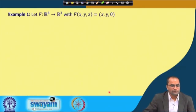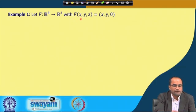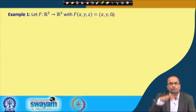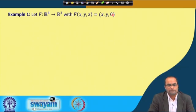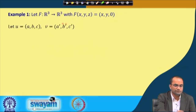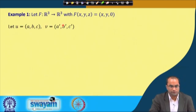Let us go through some examples. First, let F be a linear map from R³ to R³ with F(x,y,z) = (x,y,0). Here every element of R³, denoted by (x,y,z), maps to (x,y,0), so the z-component becomes 0. This is a projection of the point (x,y,z) onto the xy-plane. We can verify whether this map is linear. We take two elements from R³: one is (a,b,c) and the other is (a',b',c').